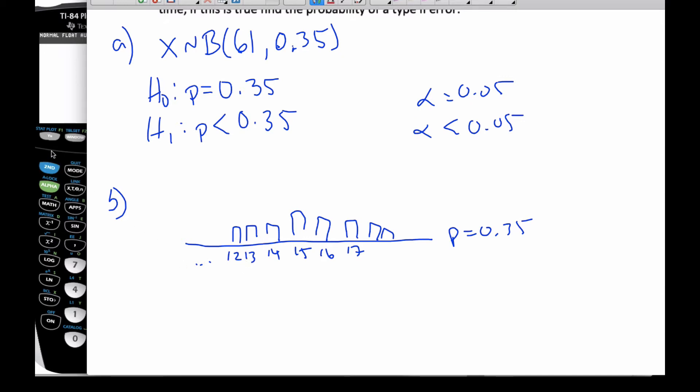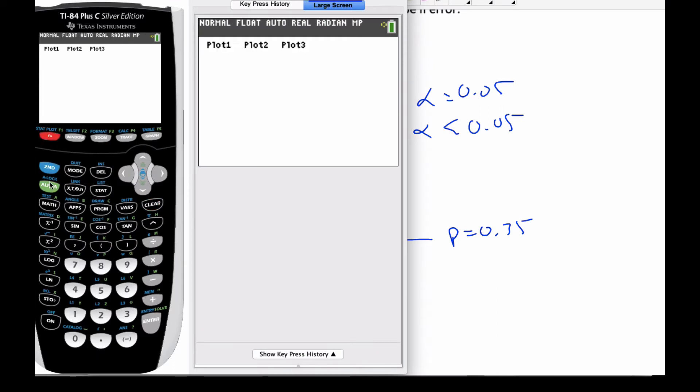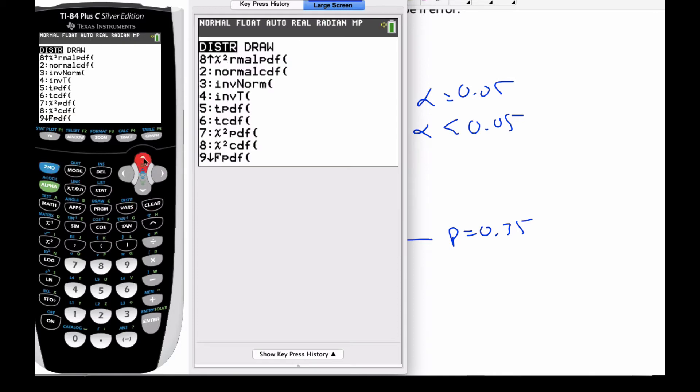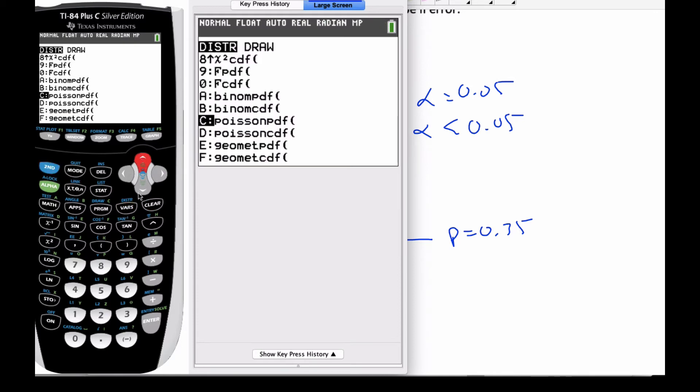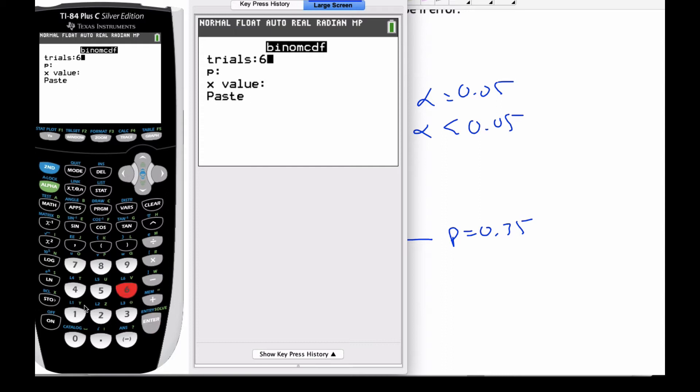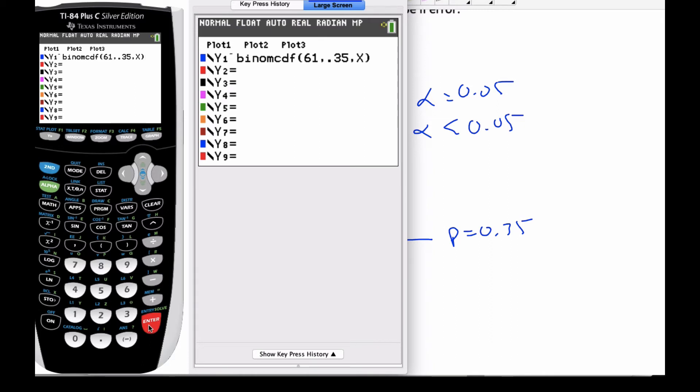One of the techniques that I do, I go to my calculator. I'm going to go to Y equals. And I'm going to do binomial CDF. Binomial CDF. And I have 61 trials. The probability is 0.35. And I'm going to do X trials. And I'm going to paste that into my Y equals. And then I'm going to look at my table.